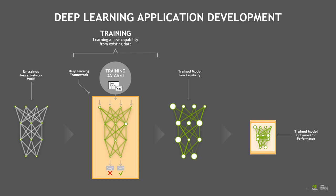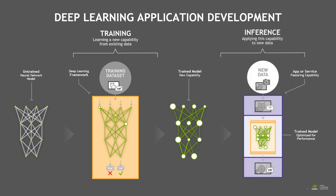Common optimizations include pruning nodes that do not contribute significantly to the results, fusing layers to reduce memory and communication overhead, and other techniques supported in the NVIDIA TensorRT runtime. The fully trained and optimized model is then ready to be integrated into an application that will feed it new data — images of cats and dogs that it hasn't seen before — and it will be able to quickly and accurately infer the correct answer based on its training. Your application can be deployed on a GPU accelerated platform in your data center, in the cloud, on a local workstation, in a robot, a smart camera, or even a self-driving car.